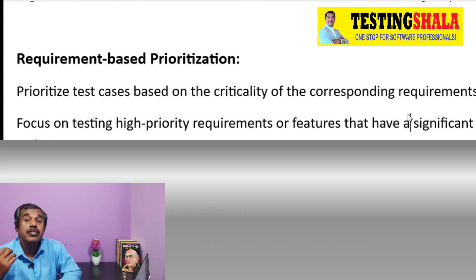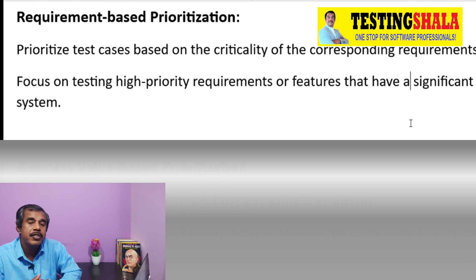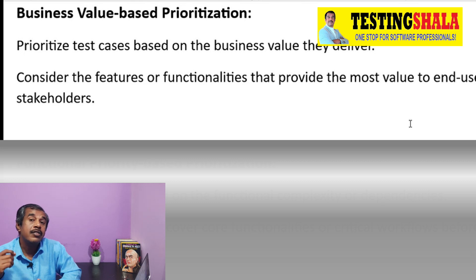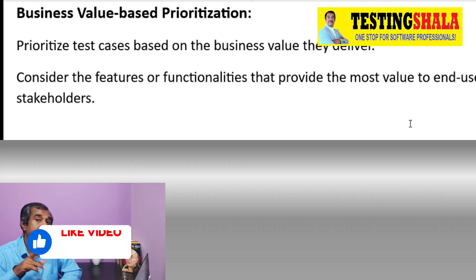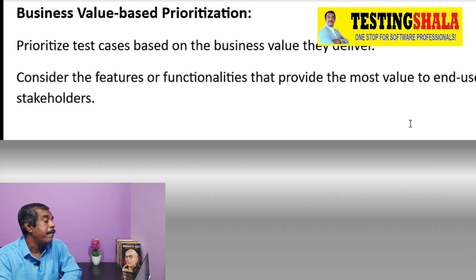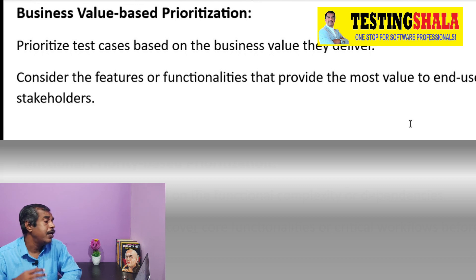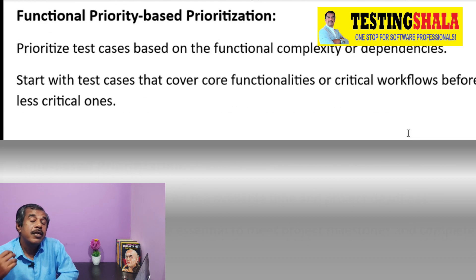The third one is business value prioritization. If the customer or business stakeholders say that a particular requirement or test case is very important, we should prioritize our testing to bring more business value. That is the kind of prioritization we normally do using business value prioritization.